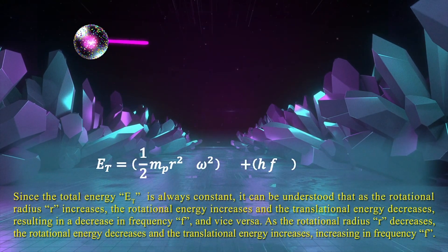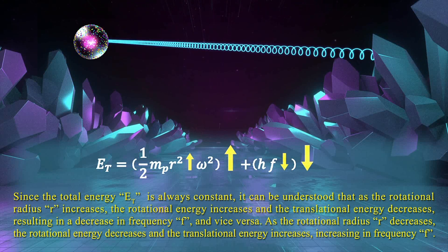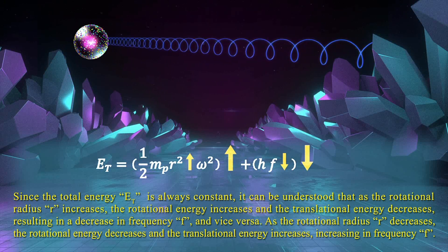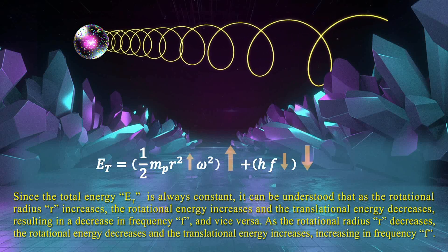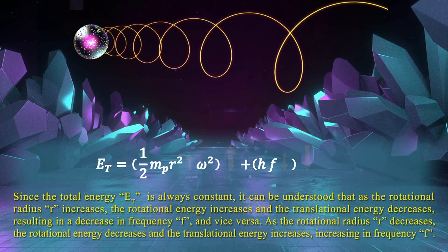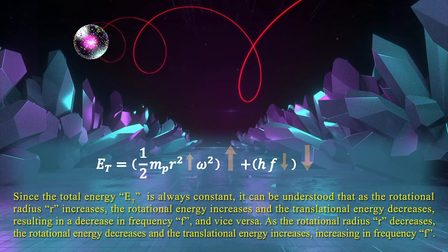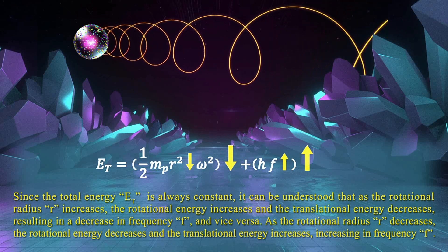Since the total energy E is always constant, as the rotational radius increases, the rotational energy E_R increases and the translational energy E_L decreases, resulting in a decrease in frequency, and vice versa. As the rotational radius decreases, the rotational energy E_R decreases and the translational energy E_L increases, increasing the frequency.